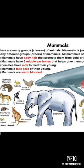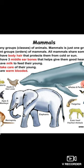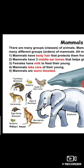What are the common features of mammals? Mammals have body hair that protects them from cold or sun — there are some exceptional cases. Mammals have three middle ear bones that give them good hearing. Females have milk to feed their young ones. Mammals take care of their young ones. Mammals are warm-blooded. These are all the important common features of the class Mammalia.